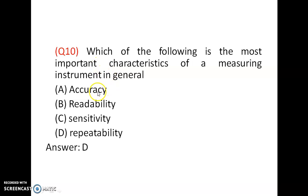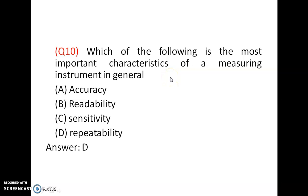Which of the following is the most important characteristic of a measuring instrument in general? Repeatability — the instrument should give the reading again and again. So repeatability is the most important characteristic of a measuring instrument.